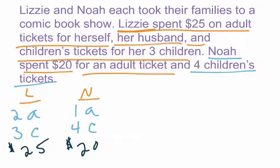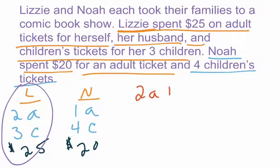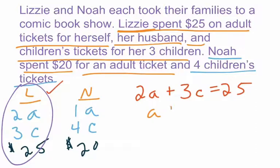Essentially, what we'd be asked is how much are adult tickets and how much are children's tickets — we need to solve for two different variables. So let's write an equation. Starting with Lizzie's information: two adult tickets plus the three children's tickets needs to equal $25. So 2A plus 3C equals 25. That's Lizzie's equation. For Noah's, we've got one adult ticket — I'll just put A — plus 4C for children's tickets, and that equals $20.